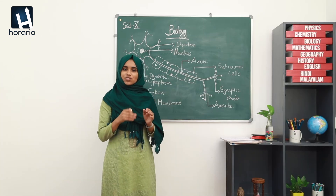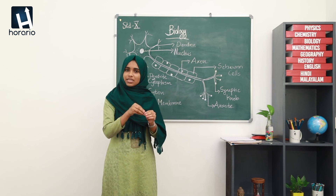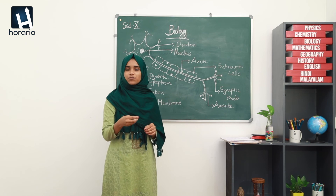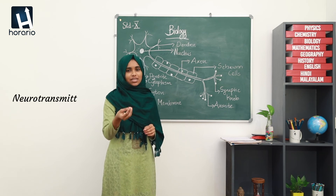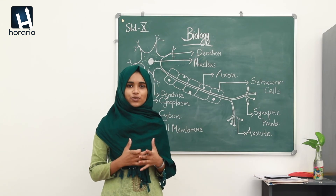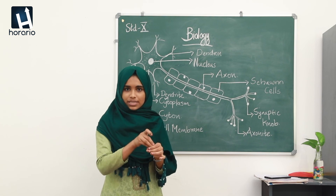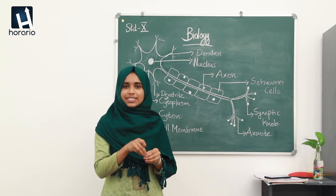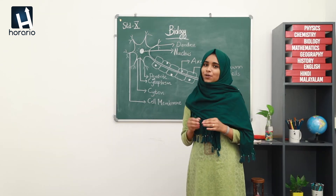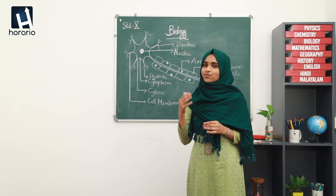Now we want to transmit impulses from one neuron to another neuron. The impulse is at the synaptic knob, and the synaptic knob secretes a special chemical substance known as a neurotransmitter. We will discuss the function and peculiarities of the neurotransmitter in a later class.